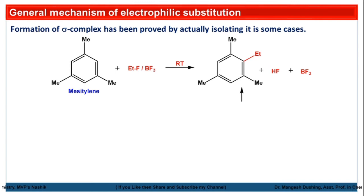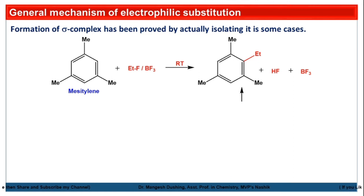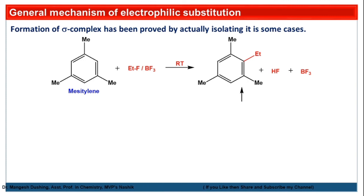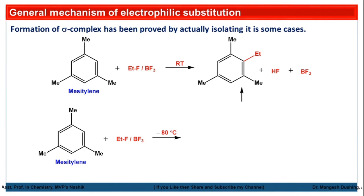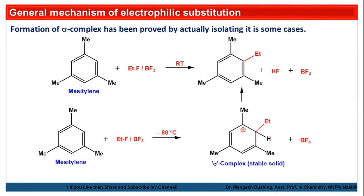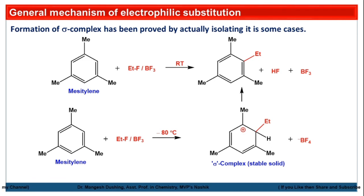The formation of the sigma complex has been proved by actually isolating it in some cases. For example, mesitylene reacted with fluoroethane in the presence of BF₃ at room temperature gives a substitution product. But if the same reaction is carried out at minus 80°C, we can isolate the sigma complex as a stable solid, because the tertiary carbocation formed is more stable. If we increase the temperature, the sigma complex is converted to the required substitution product.